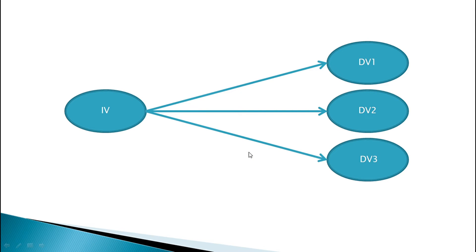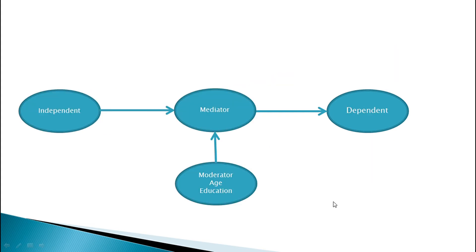It all depends on your conceptual model, your own understanding, and your theoretical framework — how you want to explain and establish the dependent and independent variables and their relationships. In this video I'm just trying to help you decide your own variables, and based on your understanding and literature review you can develop the interplay among these variables to build your own model. In coming videos I'll explain how to test these models and how to validate them using reliability, validity, and different types of validity.